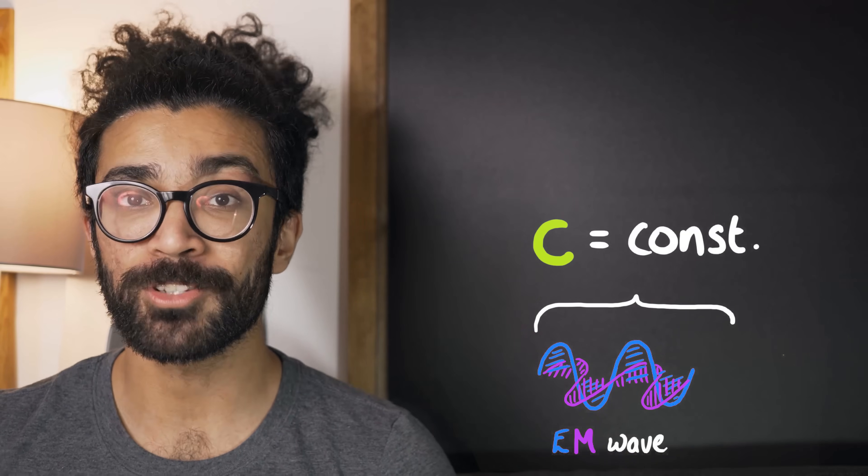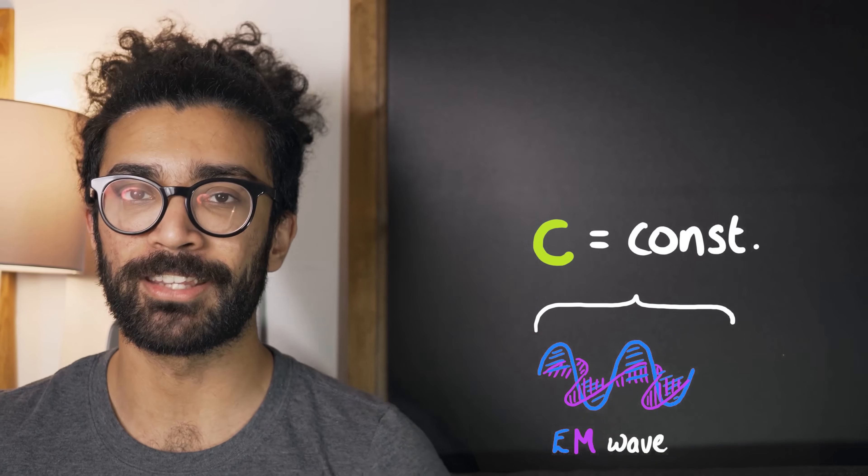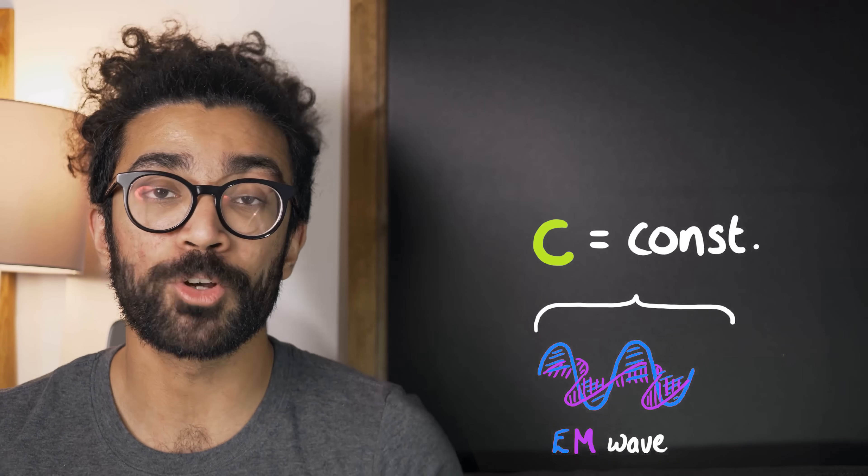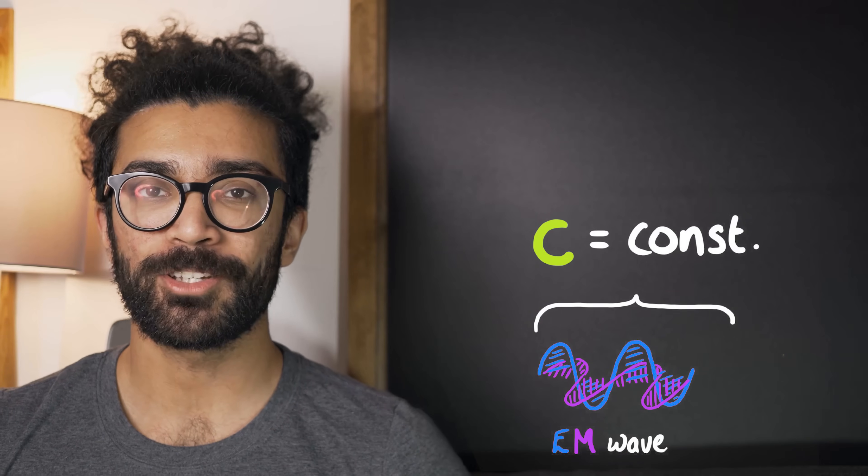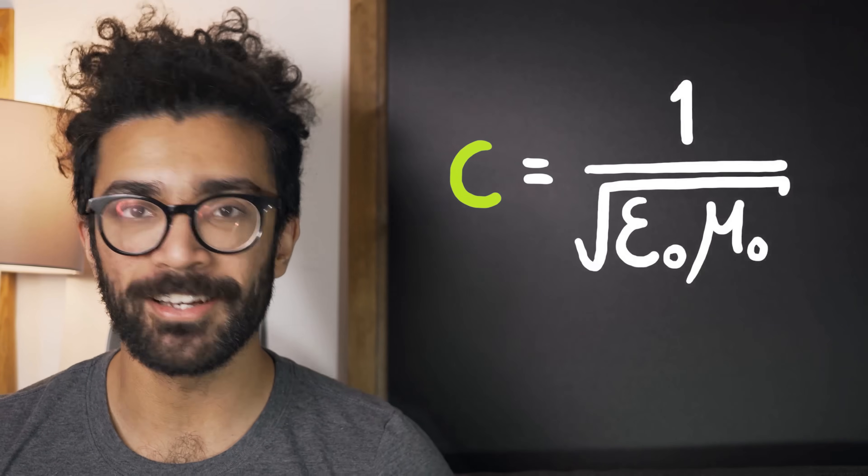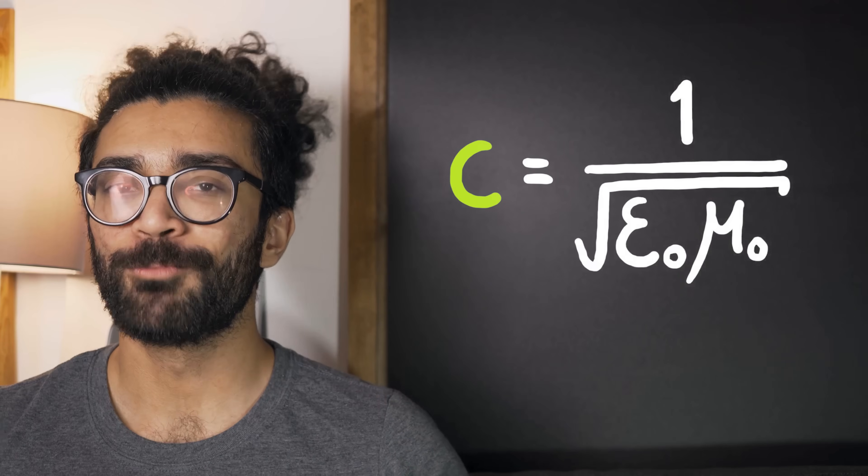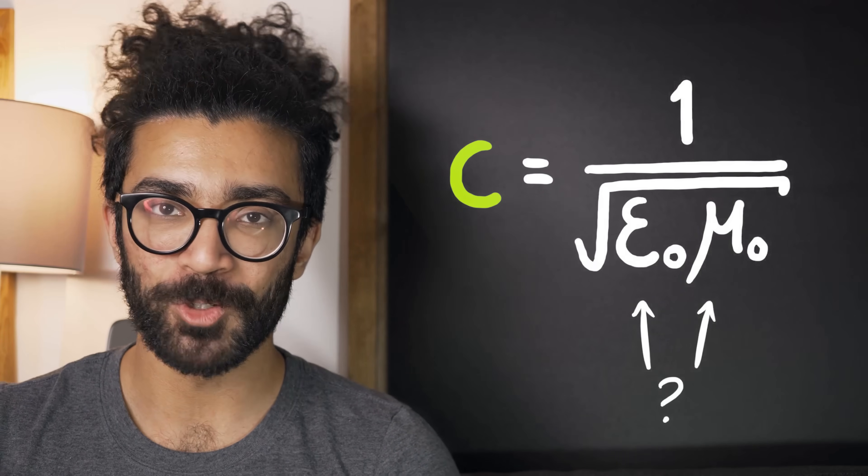So any observer, regardless of what speed they were traveling at relative to anything else, the speed of light in the theory of electromagnetism was thought to be constant. Now that constant happened to be equal to this quantity here, 1 divided by the square root of epsilon 0 mu 0. So let's take a look at what epsilon 0 and mu 0 actually are.